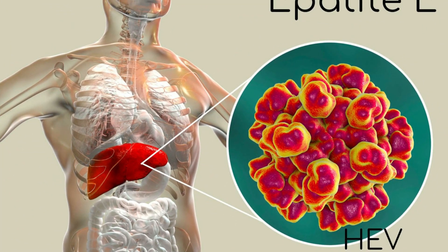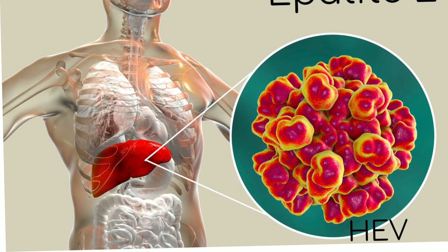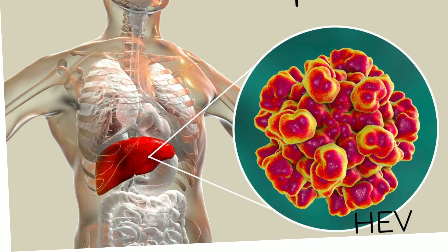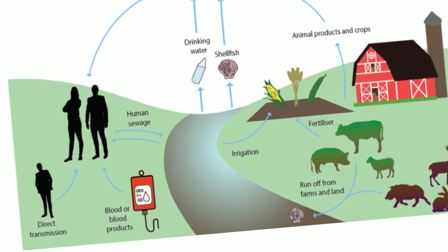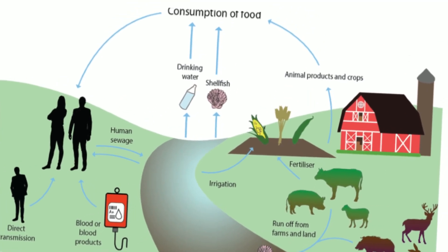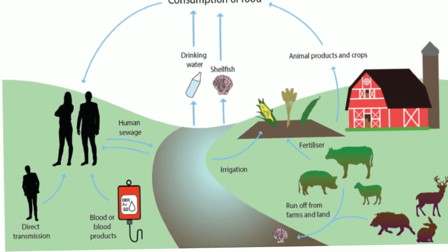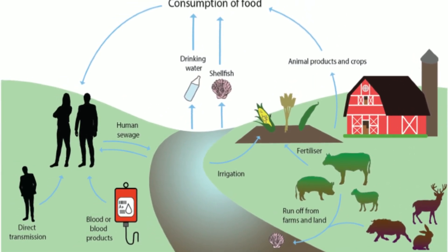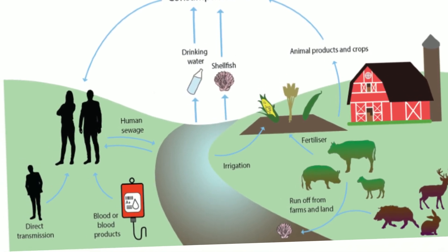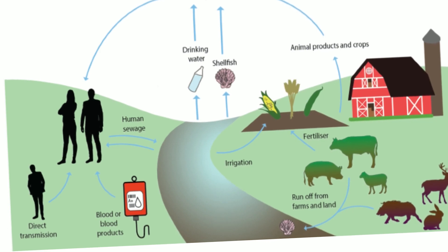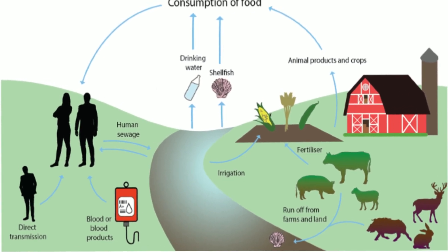What about hepatitis E? The majority of hepatitis E cases occur in underdeveloped nations. This virus is not accompanied by a persistent infection. The hepatitis E virus is transmitted by consuming tainted food or water, or by ingesting the feces of infected humans and animals. Person-to-person transmission occurs less frequently compared to the hepatitis A virus.